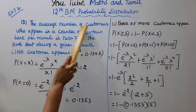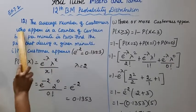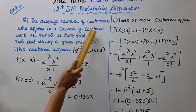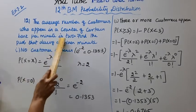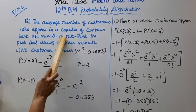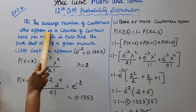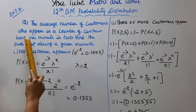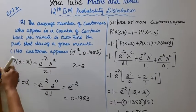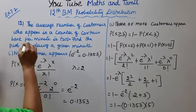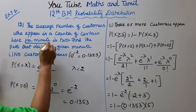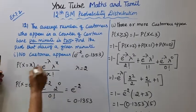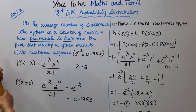The average number of customers who appear at the counter of a certain bank per minute is 2.